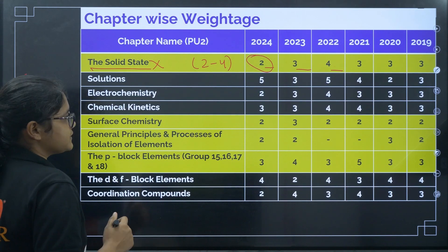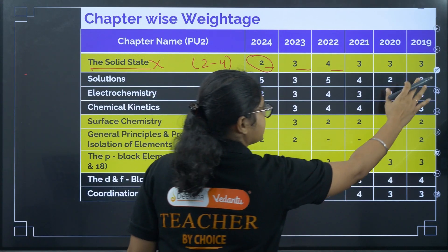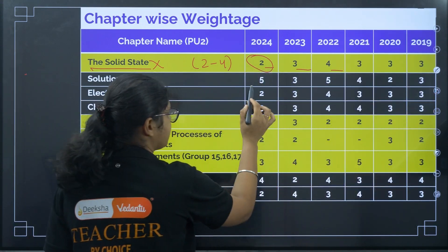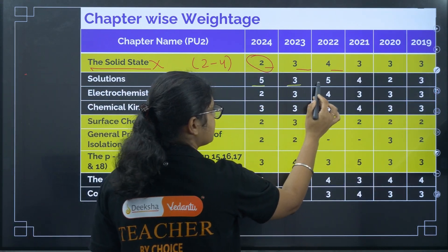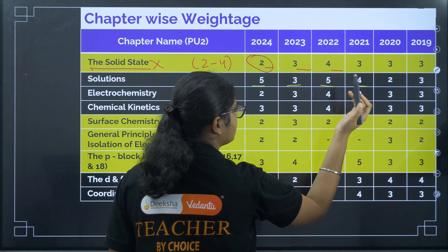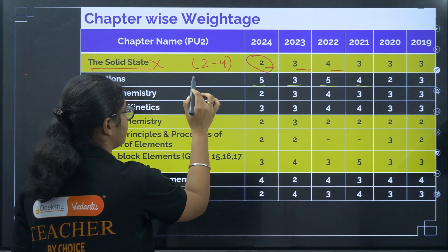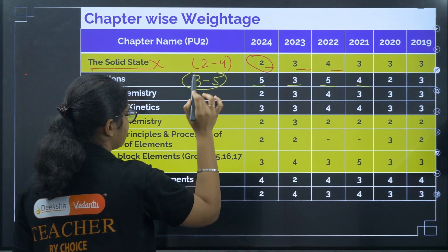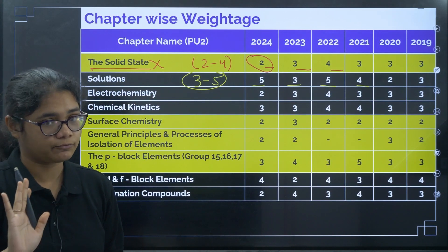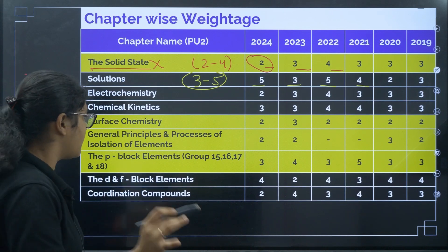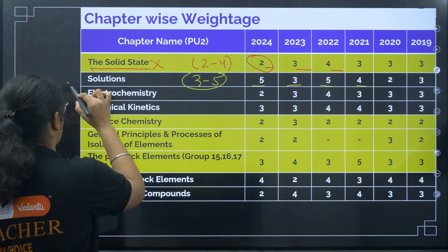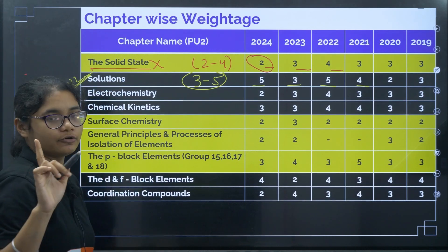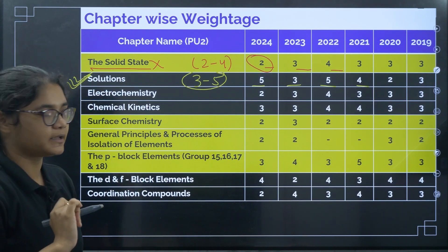Coming to the Solutions chapter — you can see 5, 3, 5, 4, 2, 3 questions over the last six years. This is a very high weightage topic where you can easily get three to five questions. It is a must-do topic — you should not leave this topic.